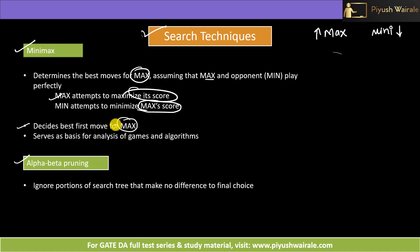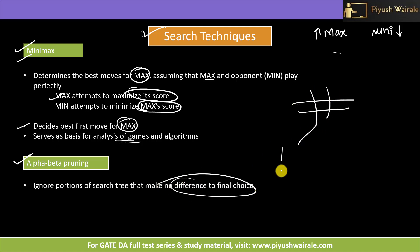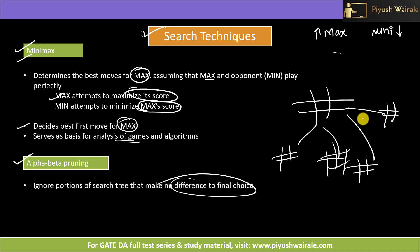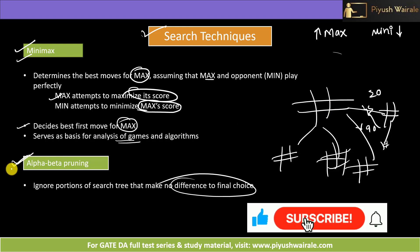Mini-max decides the best first move for max. Alpha-beta pruning is another technique — it's a modified version of mini-max. In alpha-beta pruning, we ignore some portions of the search tree that make no difference to the final choice. For example, if we know that one move gives a 20% chance of winning and another gives 90%, we will prune all branches of the lower-probability move because we know we are not going to win by going that route. We will discuss this in detail in the alpha-beta pruning part.